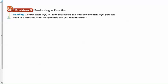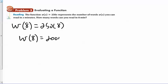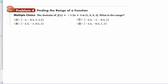The function w of x equals 250 represents the number of words you can type or read in x minutes. How many words can you read in eight minutes? This is just literally w of 8 equals 250 times 8. So what is 250 times 8? That's 2000. So w of 8 is 2000. Pause the video, do the guide, I'll see you back here in a minute.